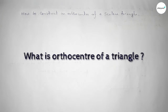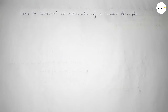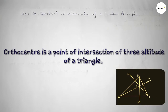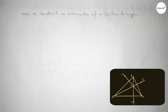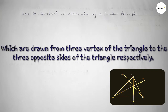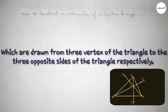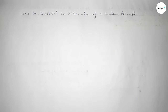The orthocenter is the intersection of the three altitudes of a triangle, which are drawn from the three vertices of the triangle to the three opposite sides of the triangle respectively.